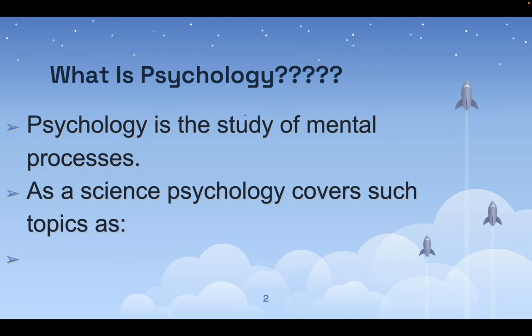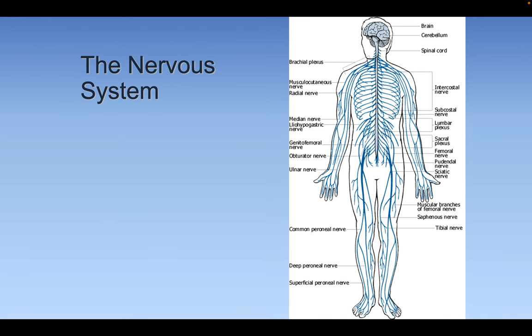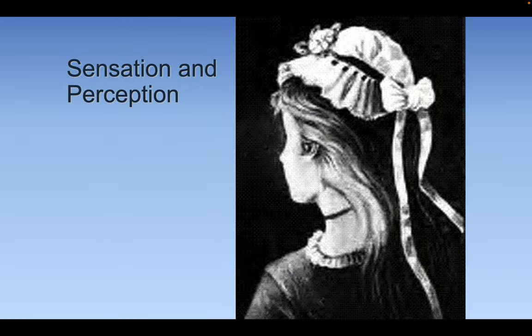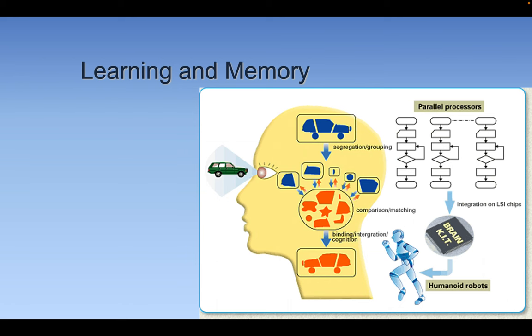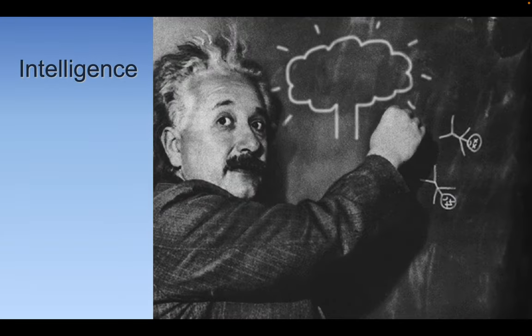So what is psychology? It's the study of mental processes. As a science, it covers lots of stuff. It covers the nervous system. Sensation and perception — that's cognitive psychology. Learning and memory — also cognitive psychology — and probably intelligence.